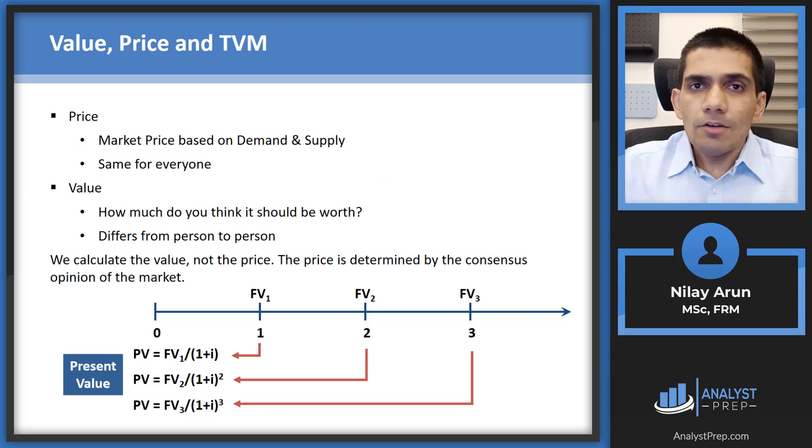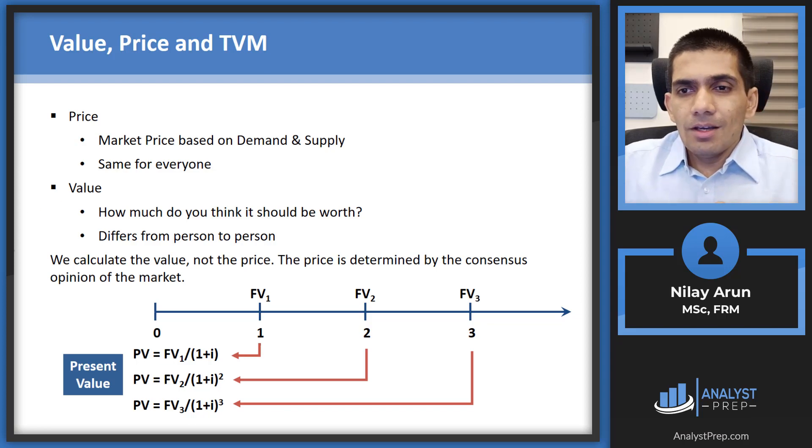Now pretty much everything in finance is valued using DCF, using time value of money. So we get back to our old friend, the timeline. So this is what the timeline is. So from zero right till infinity. So just a quick recap, we have various future values, FV1, FV2, and FV3. If we have to price any asset, what do we do? We discount every future value to time period zero.